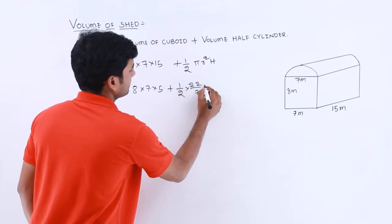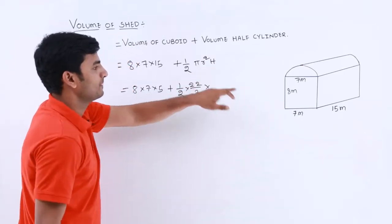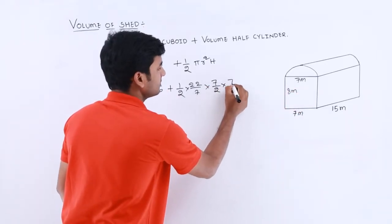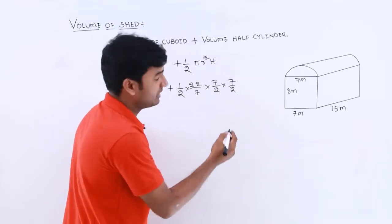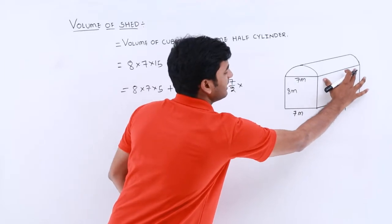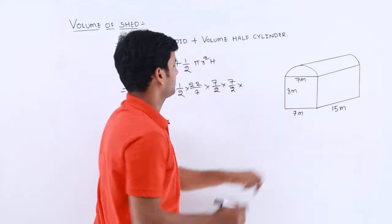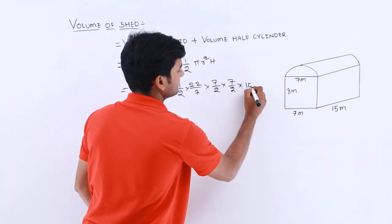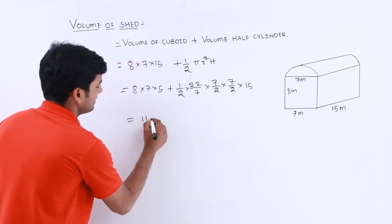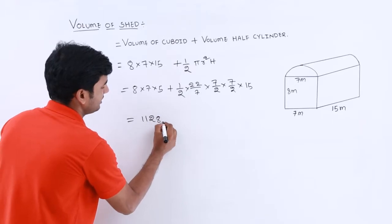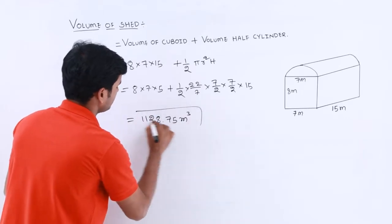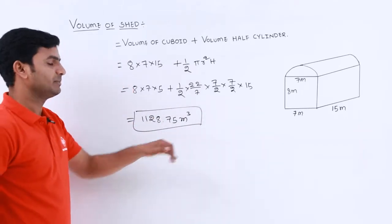Into r that is 7 by 2, 7 by 2 into 7 by 2 into height, height of this cylinder that will be 15 meter. So if you solve this, we will get approximately 1128.75 meter cube. So this will be the complete volume of shed.